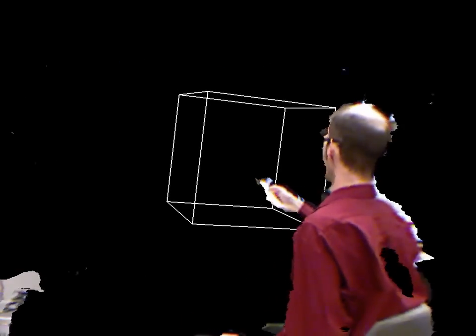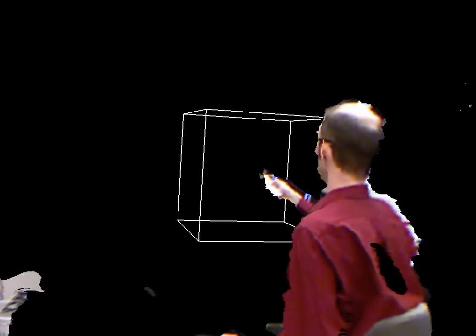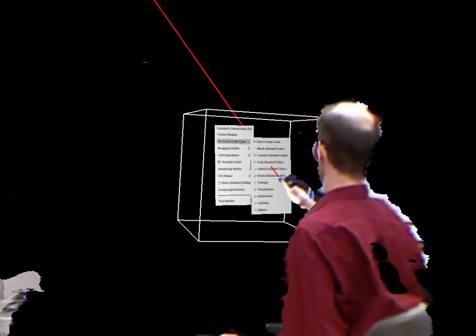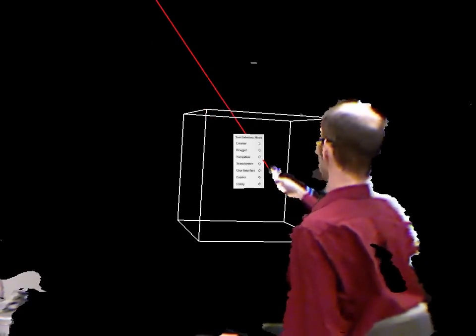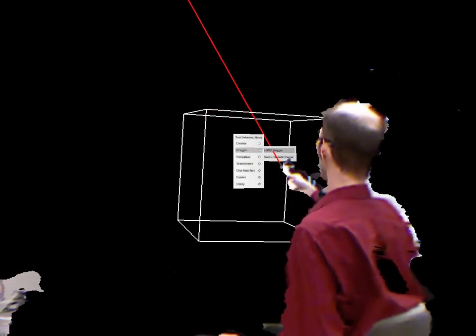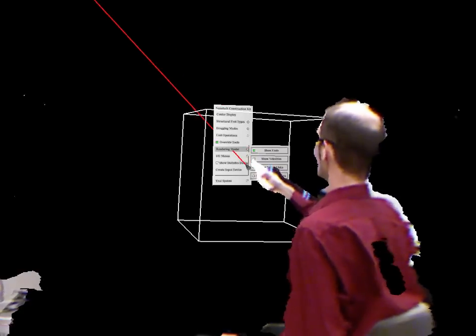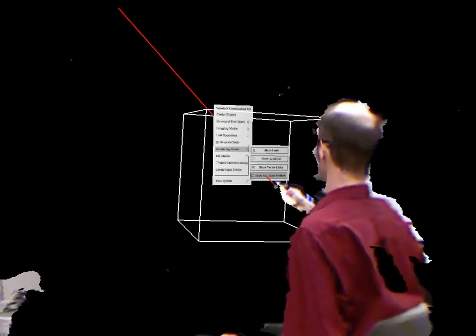The program we're looking at right now—well, it doesn't look like much—is called the Dynamite Construction Kit. It's an interactive molecular dynamics simulation. It allows me to build molecular structures from scratch just by manipulating atoms and putting them in there interactively. I'm just setting it up here a little bit.